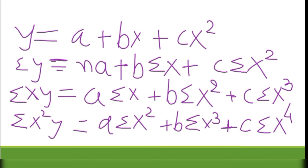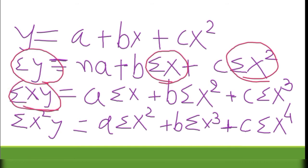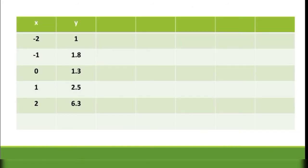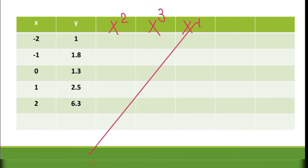We need: sigma x, sigma y, sigma x², sigma xy, sigma x³, sigma x²y, and sigma x⁴. So the table columns will be: first column for x, second for y, then x², then x³, then x⁴, then xy, and the last column for x²y.